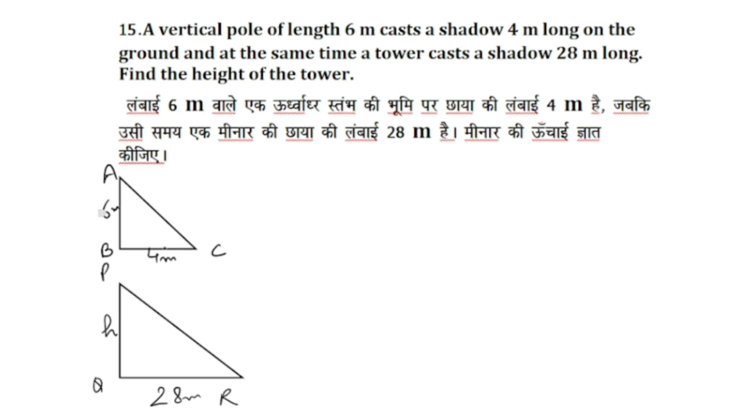First we have to understand this angle. This angle A and angle P are the same. If angle A and P are the same, we have angle B and angle Q are the same - this is 90, 90. The pole is vertical. The angle of sun is the same.